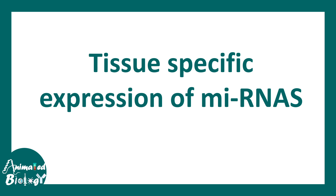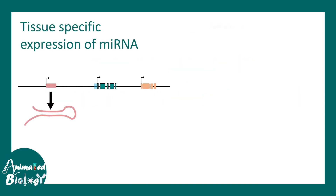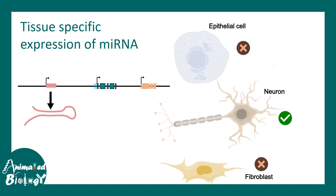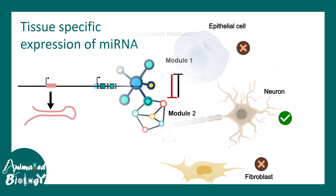Micro-RNAs are present in a tissue-specific and cell-specific manner. For example, one micro-RNA might not be present in an epithelial cell, but may be present in a neuron, and absent again in a fibroblast. There can be micro-RNAs that are very cell-type specific, while others are present in nearly all cell types. Depending on their function and availability, micro-RNAs regulate overall gene regulatory networks in different cell types.